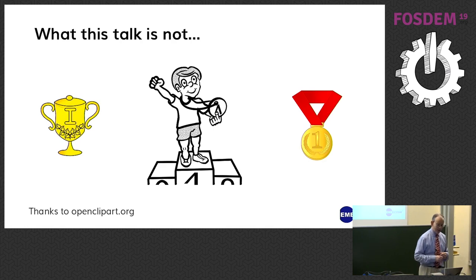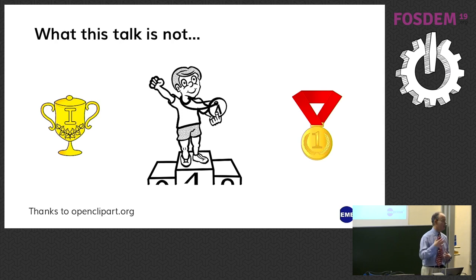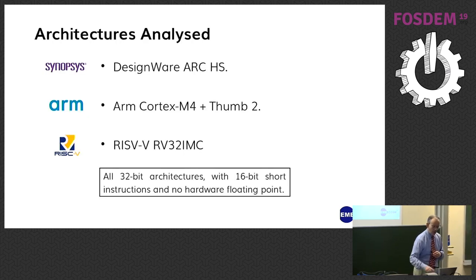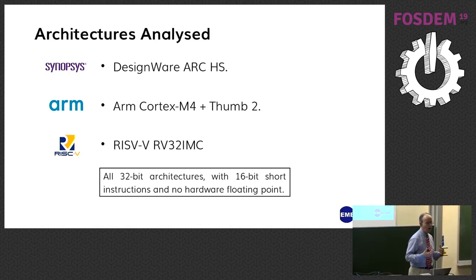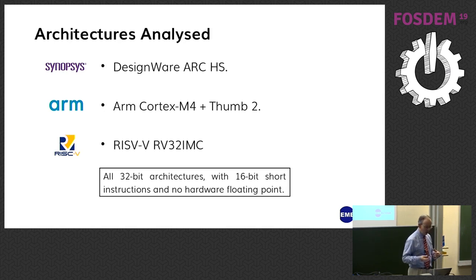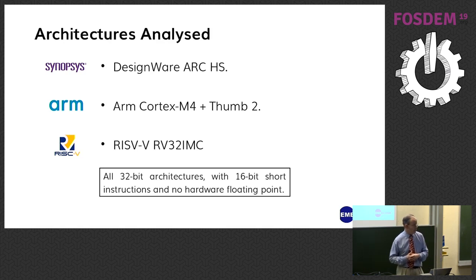One thing I want to be clear is: it's not this. I'm not trying to tell you which is the best processor or the best compiler. We've looked at three architectures: the Designware ARC HS, the ARM Cortex-M4 with Thumb2 instructions, and the RISC-V RV32 IMC.